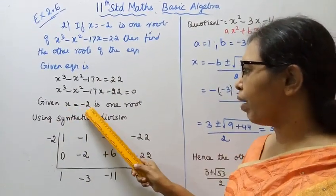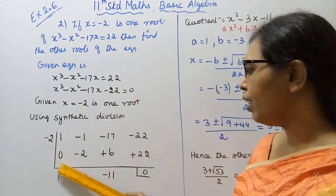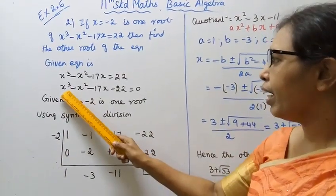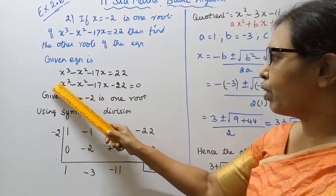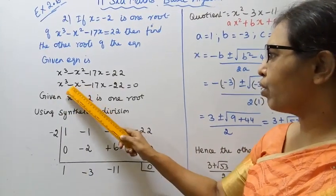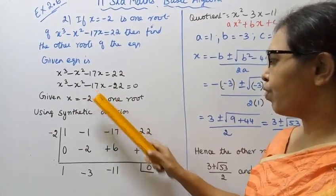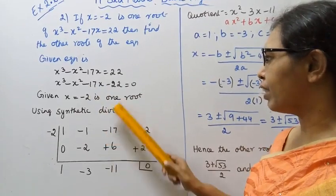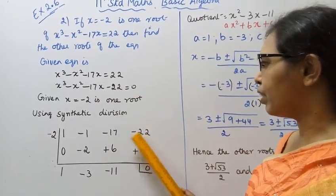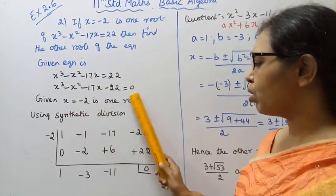x equal to minus 2. Synthetic division is from 10th standard. We will be able to do: x cube coefficient is 1, x square coefficient is minus 1. x equal to minus 2 is one root.